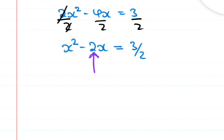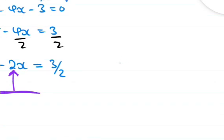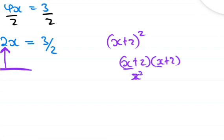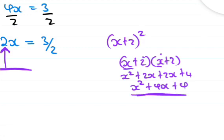Take half of the coefficient, square it, and add it to both sides. This will make the left hand side a perfect square. This is the meaning of completing the square — you get an expression like x plus something, all squared. For example, x plus 2 times x plus 2 gives x squared plus 4x plus 4, which is a perfect square.